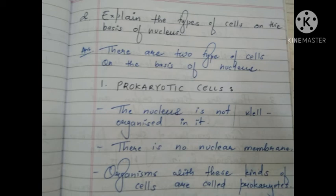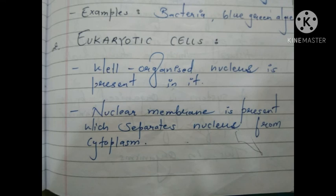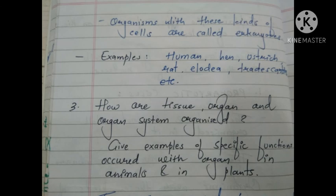The answer: first, RBC — red blood cells — shape is round/spherical, function is transport of respiratory gases. Second, muscle cells — shape is spindle, function is movement. Third, nerve cell — shape is long and branched, function is conduction of impulse. Second question: explain the types of cells on the basis of nucleus. There are two types: prokaryotic cells, where the nucleus is not well organized and there is no nuclear membrane — examples are bacteria and blue-green algae.